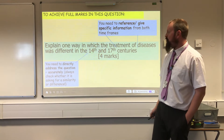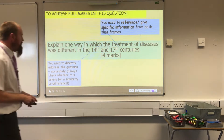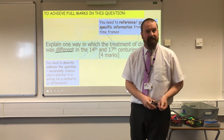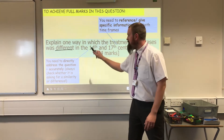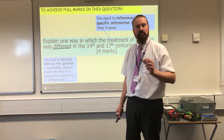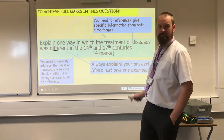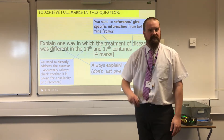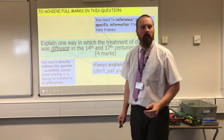Next, make sure you're always addressing the question — is it asking for a similarity or a difference? This question is asking for a difference: explain one way that treatment was different in the medieval and renaissance periods. That word could very easily be 'similar,' so make sure you're looking carefully at how the question is worded. Final point: always explain. This is a four-mark question. You could probably get two or three out of four just by throwing some examples at it, but you've always got to add a little bit of explanation about why there's a difference or a similarity.